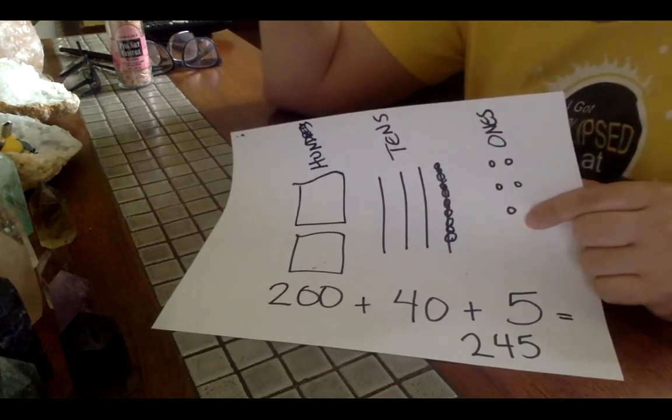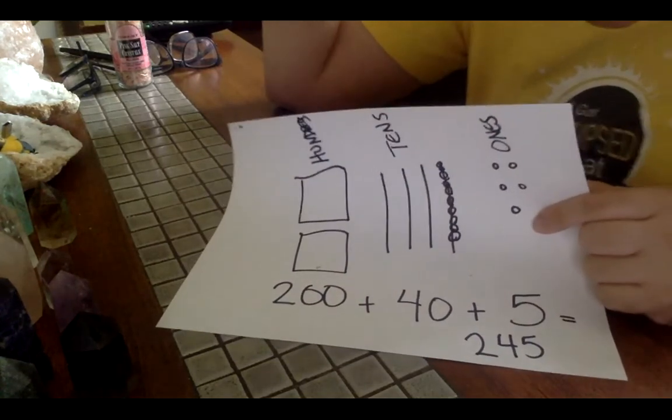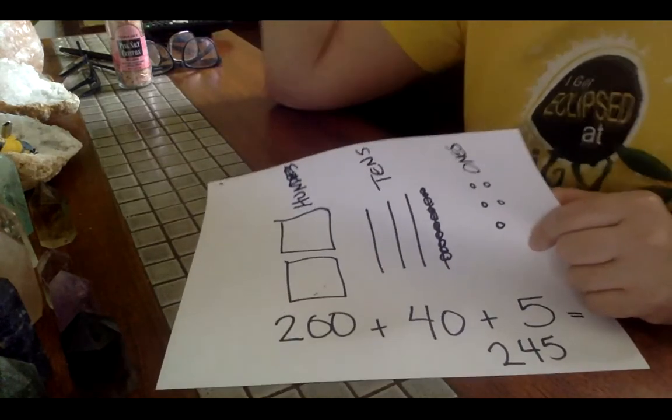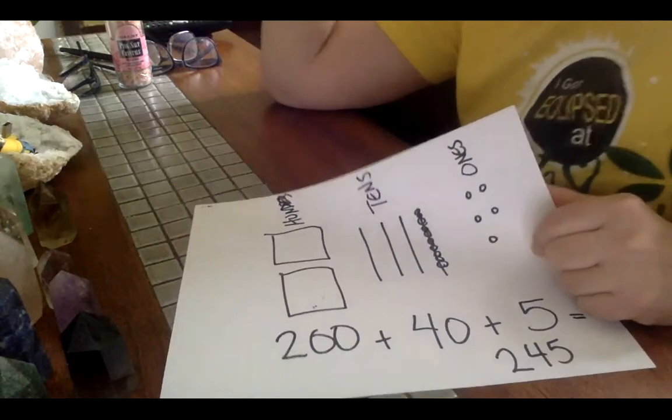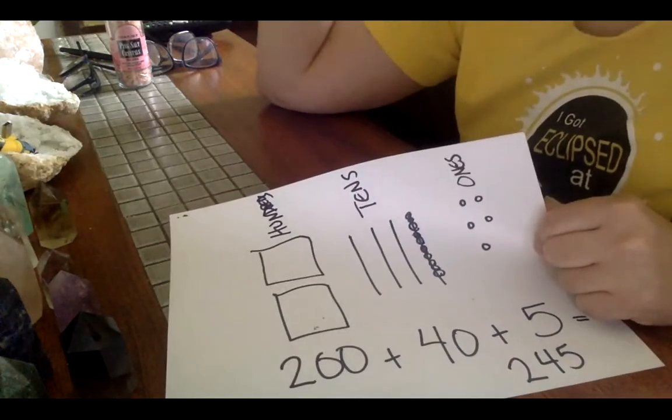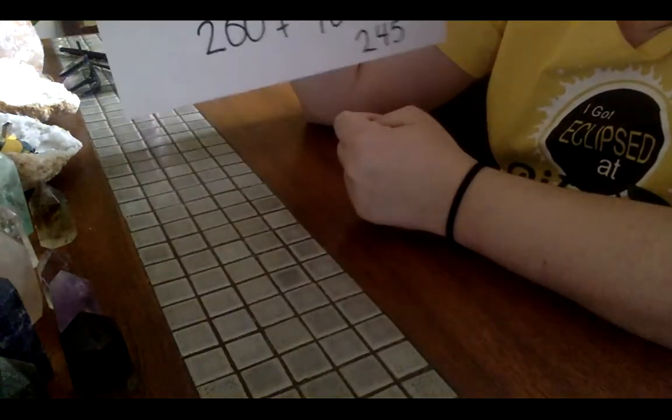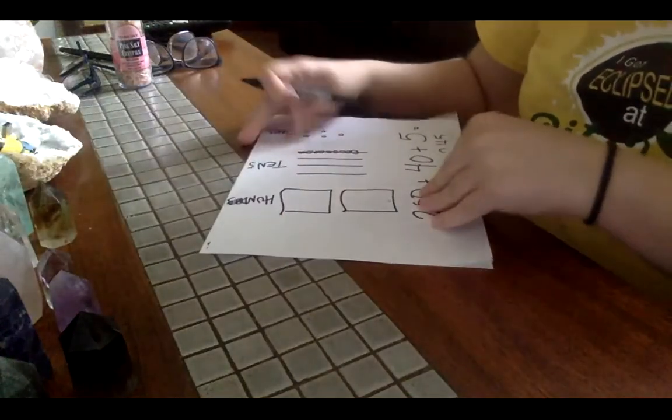And we could keep going. Unit million, 10 million, 100 million. Unit billion, 10 billion, 100 billion. Unit trillion, 10 trillion, 100 trillion. It keeps going. And if you notice, keep adding a place and a zero at the end.